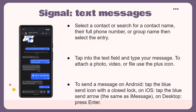For text messages, select a contact or search for a contact name, phone number, or group name, then select the entry. Tap into the text field and type your message. To attach a photo, video, or file, use the plus icon. To send messages on Android, tap the blue send icon with a closed lock. On iOS, tap the blue send arrow, which is the same as iMessages. On desktop, just press Enter.